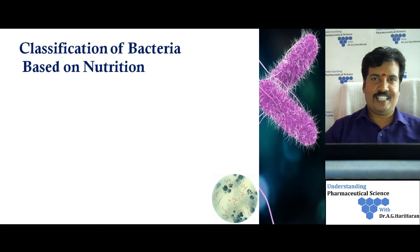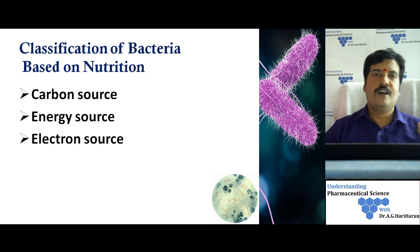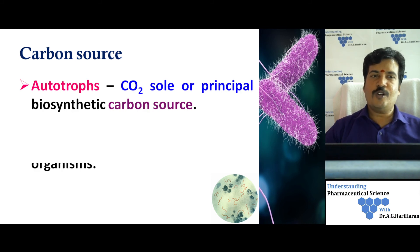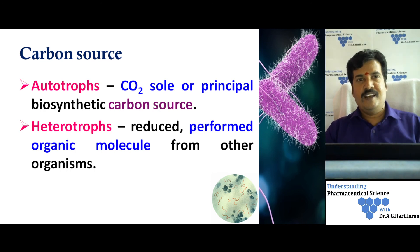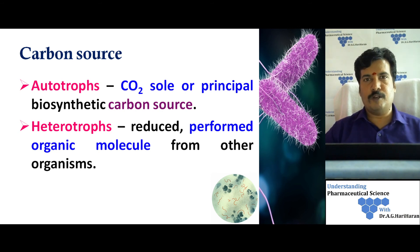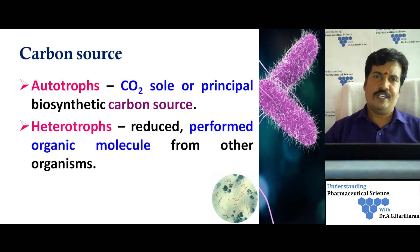In the second part, we classify bacteria based on nutrition into three major categories: based on carbon source, energy source, and electron source. Based on carbon source, bacteria are classified into autotrophs — which use carbon dioxide as their principal carbon source, synthesizing their own food — and heterotrophs, which require organic molecules such as glucose, sucrose, or lipids from other organisms as their carbon source.